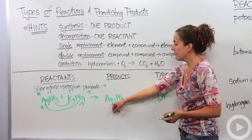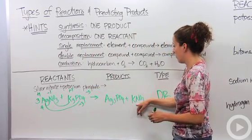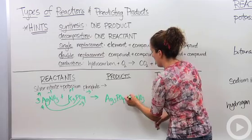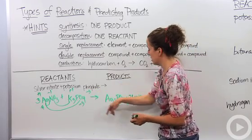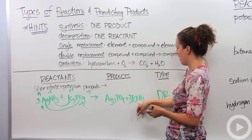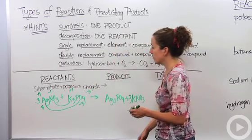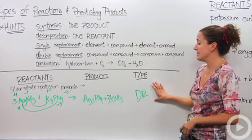So we have three silvers on this side, we need three silvers on this side. We have one nitrate on this side, one nitrate, three potassiums. So actually, sorry, this actually is balanced. Three silvers, three silvers, three potassiums, three potassiums, one phosphate, one phosphate, three nitrates, three nitrates. Perfect. So this is how we can identify if this is a double replacement reaction.